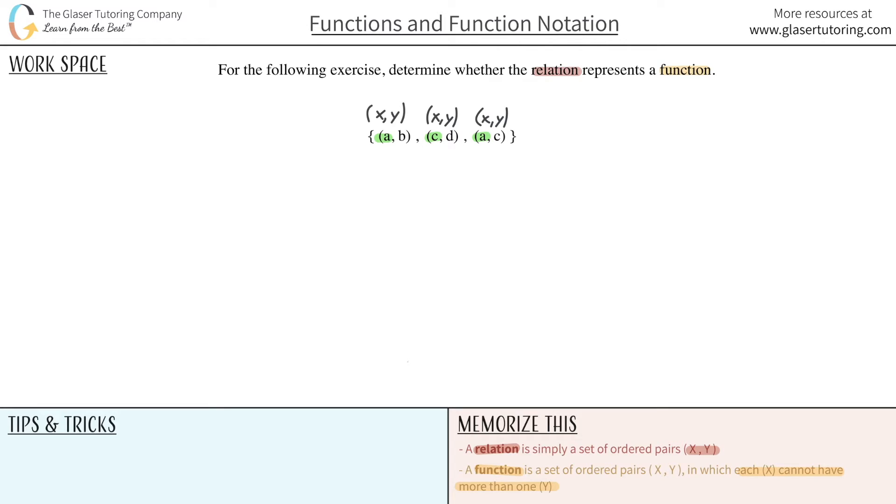So what I'm interested in is I'm interested in these x values that are the same. Because according to my definition of what a function is, a function is a set of ordered pairs in which every individual x, so here I have both a, cannot have different, a.k.a. more than one, y value.